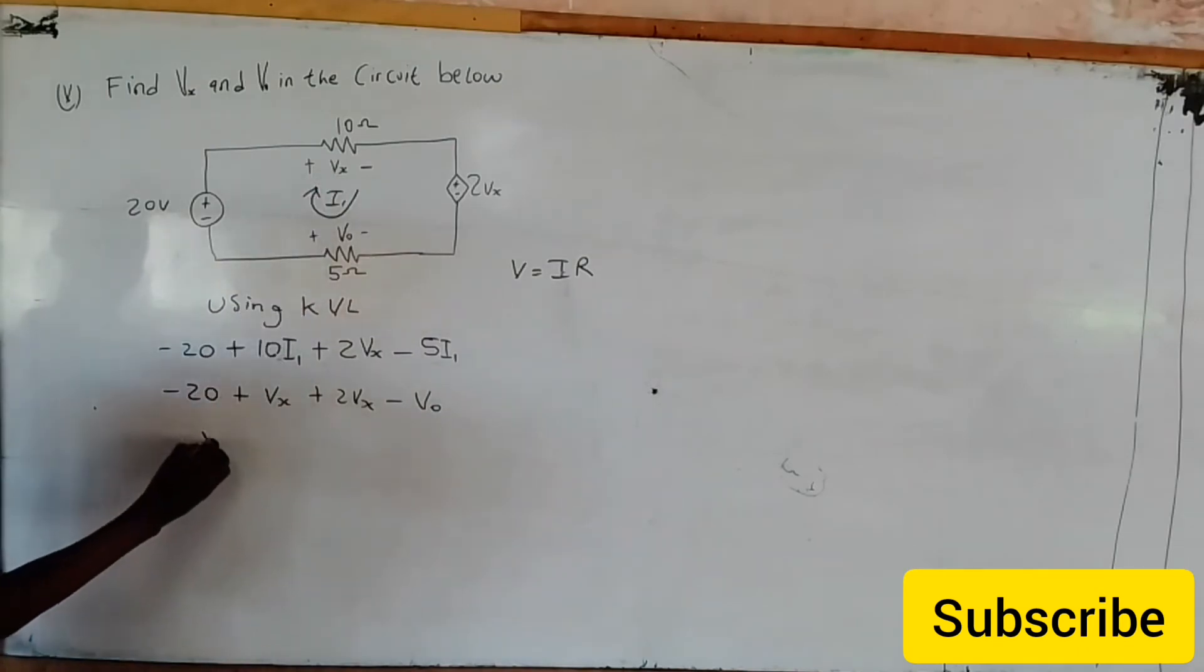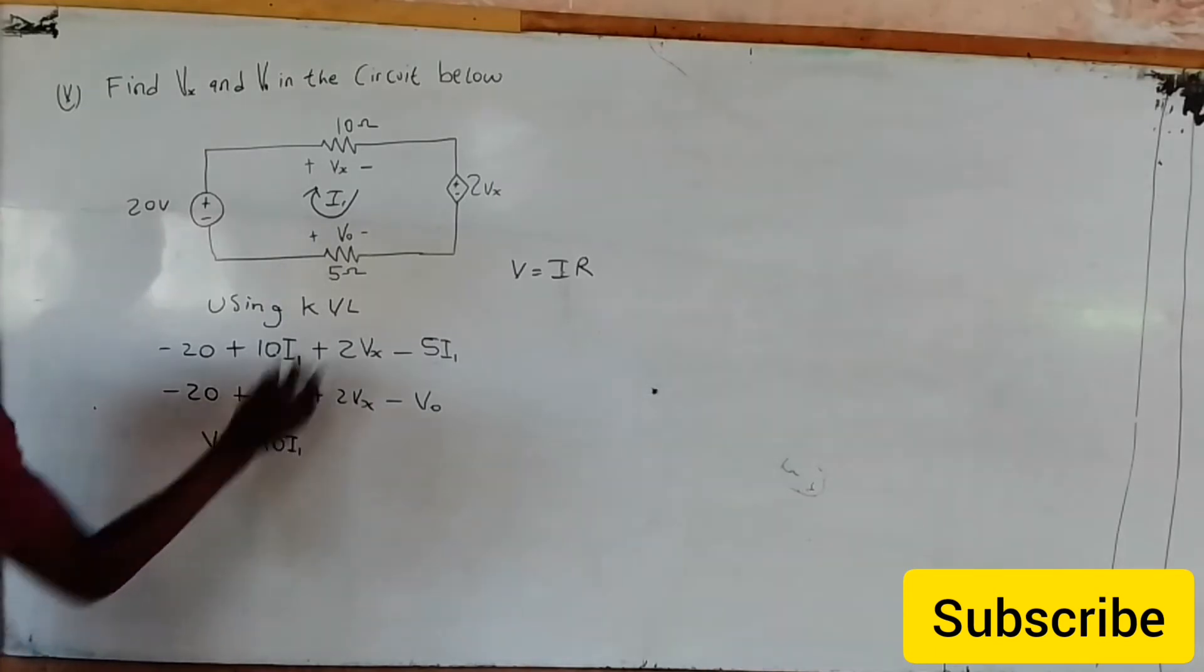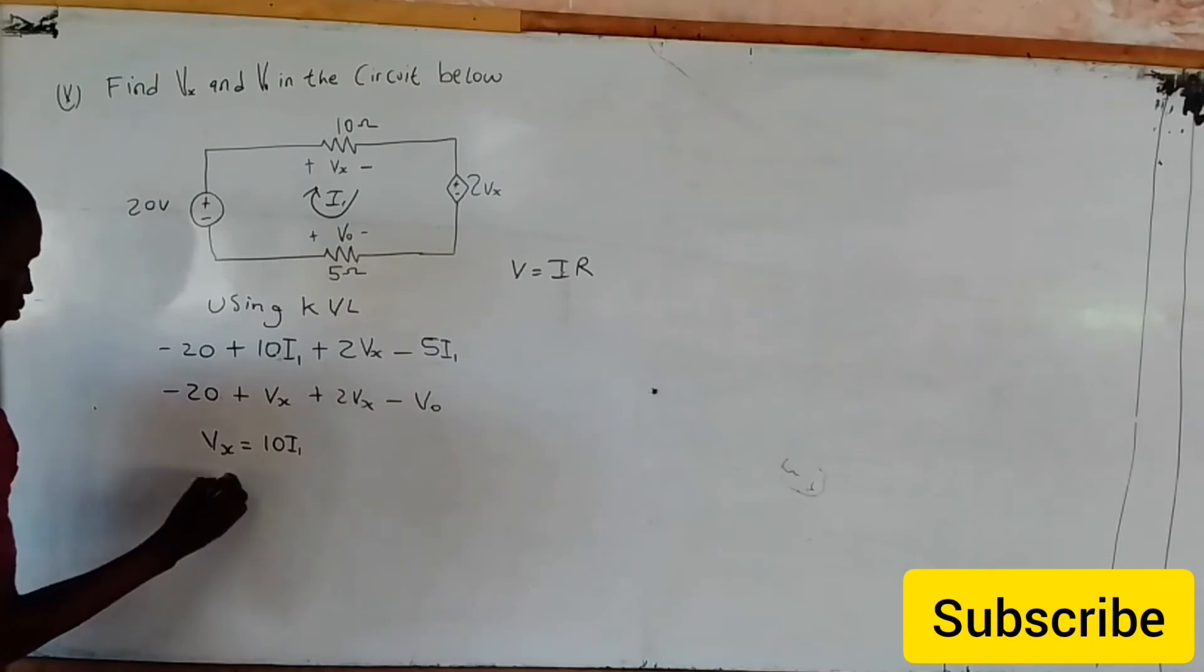Vs is equals to 10I1, which is Vs because 10I1, while V0 is equals to minus 5I1.